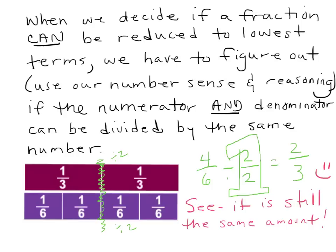When we decide if a fraction can be reduced to lowest terms, we have to figure out, by using our number sense and reasoning, if the numerator and the denominator can be divided by the same number. Remember when we were multiplying by one, even though it was two-halves or three-thirds? So if I were to say four-sixths divided by two over two, which is still the giant one, I'm going to end up with two-thirds. You can see four-sixths is two-thirds.